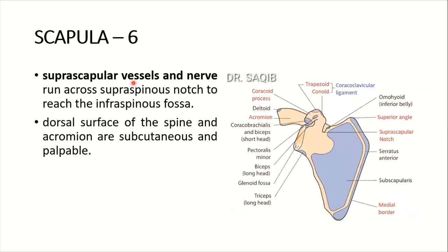The suprascapular vessels and nerve run across the suprascapular notch to reach the infraspinous fossa. The dorsal surface of the spine and acromion are subcutaneous and palpable.